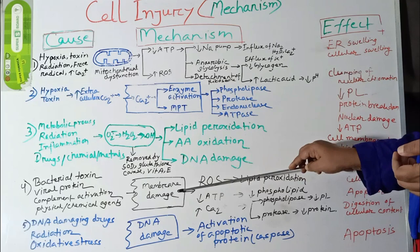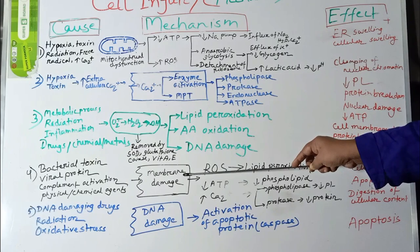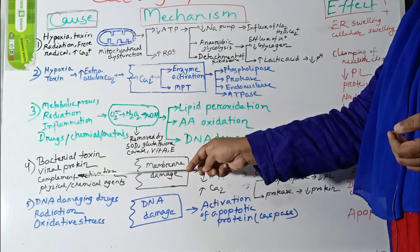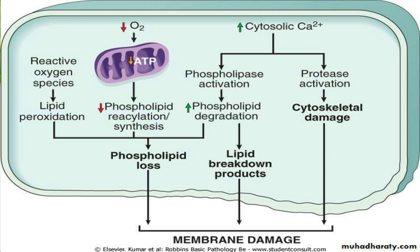Another important mechanism of cell injury is loss of membrane permeability, that is, membrane damage. Membranes are damaged by various factors like bacterial toxins, viral proteins, complement activation, as well as various physical and chemical agents. The mechanisms of membrane damage include production of reactive oxygen species, ATP depletion, and increased cytosolic calcium.